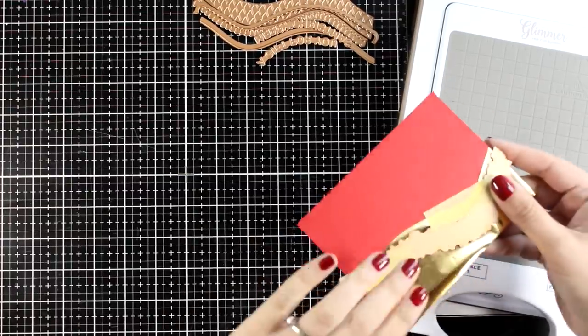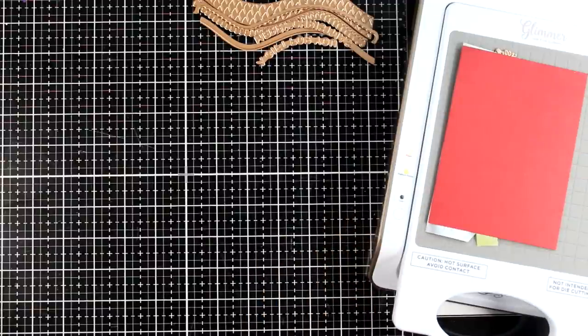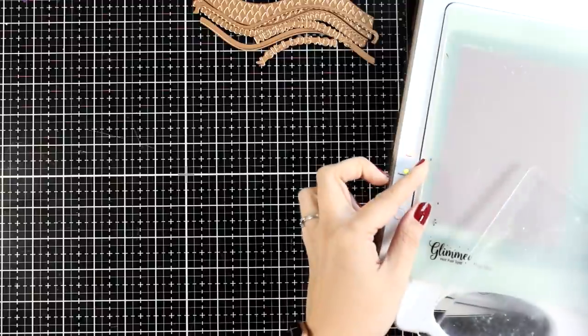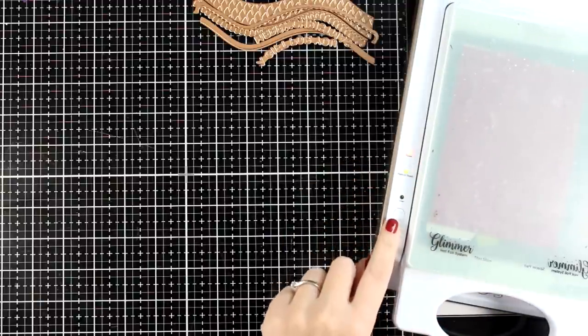As I transfer the platform to the die cutting machine, I press the button and you can see that light flashing. I have to wait until this stops, that means that the plate is nicely warmed and it can do its job.